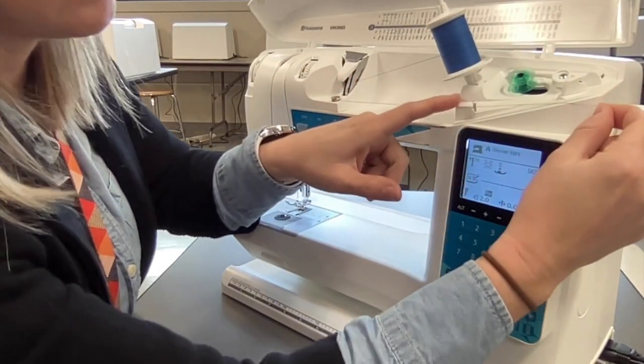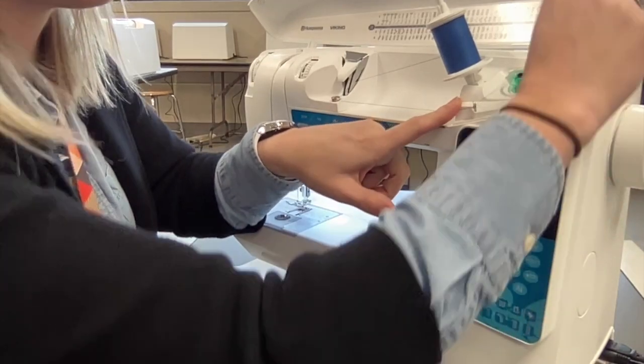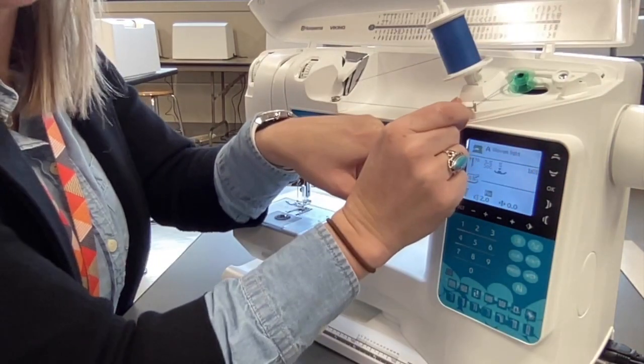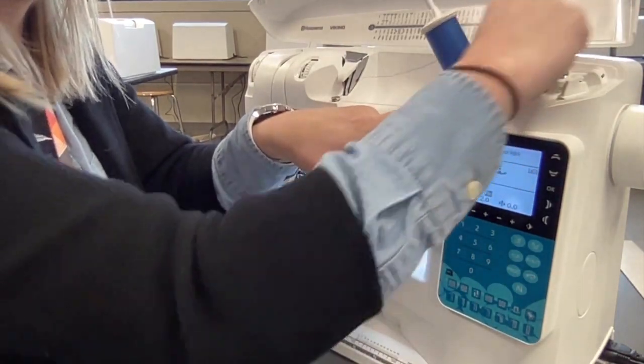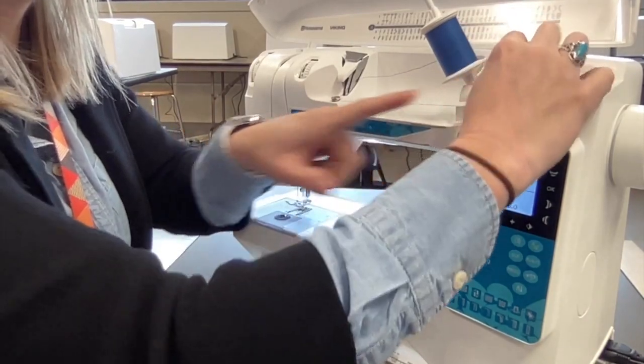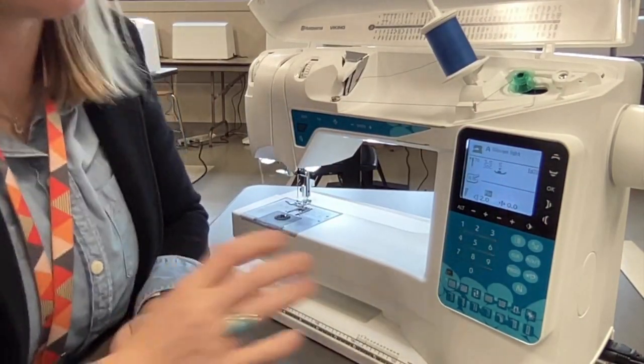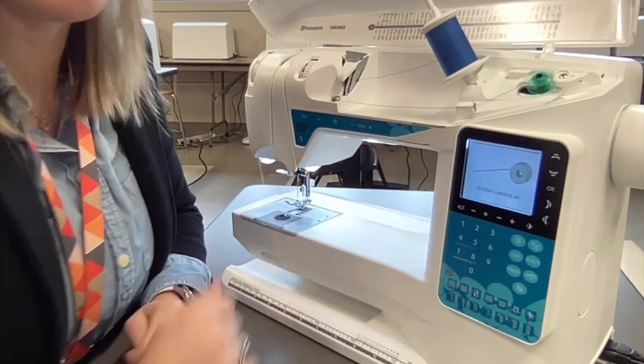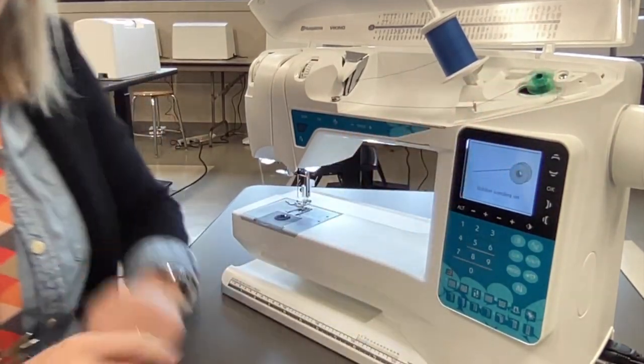There is a little holder that the thread needs to go through, and then I'm going to wrap it around my bobbin from left to right. And I'm going to wind it around, and once I've wound it a few times, all I have to do then is push my bobbin spindle over.